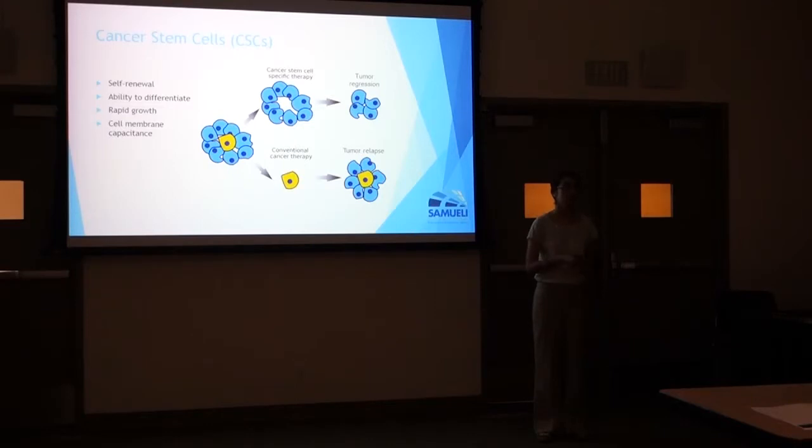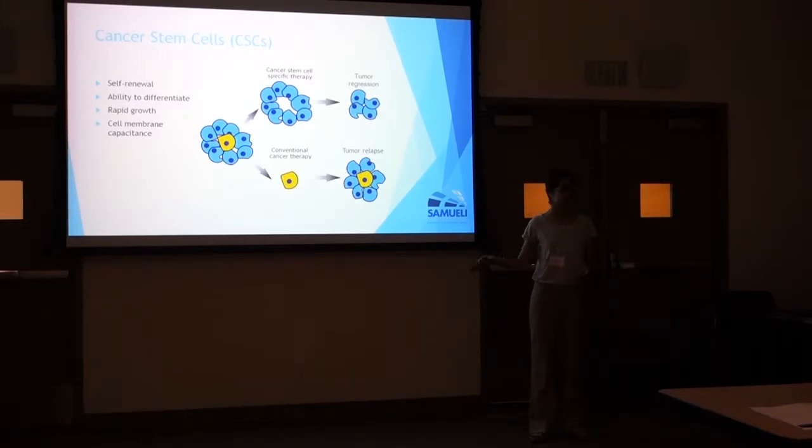As shown in this illustration, the yellow dot represents cancer stem cells. In conventional cancer therapies that are out there right now, they don't target these cancer stem cells, and that allows cancer or the tumors to persist.